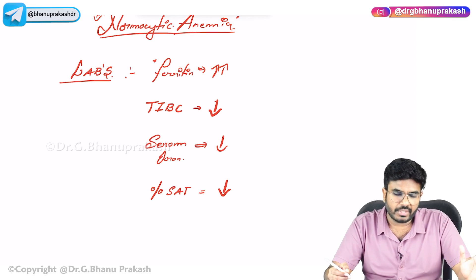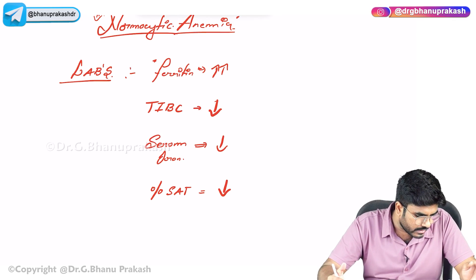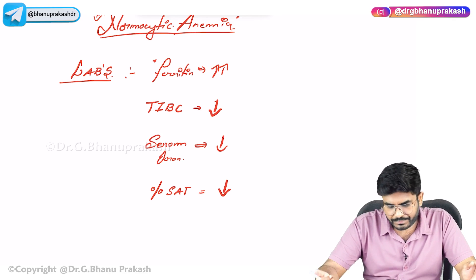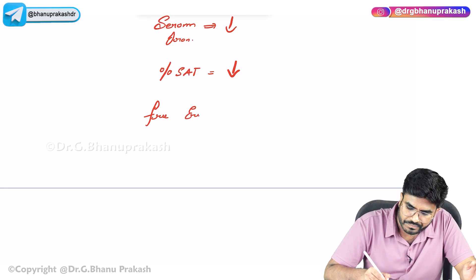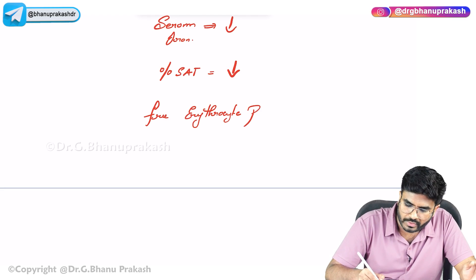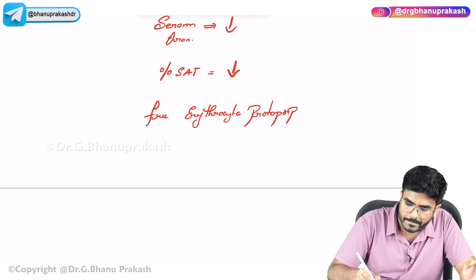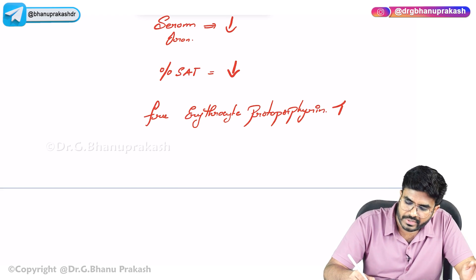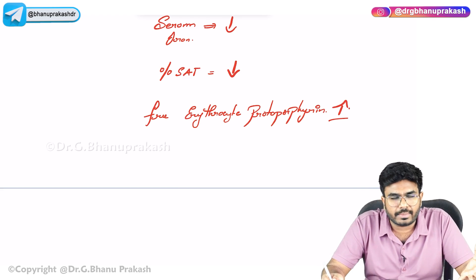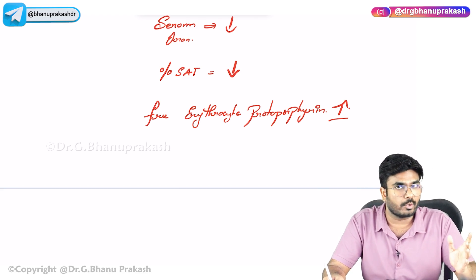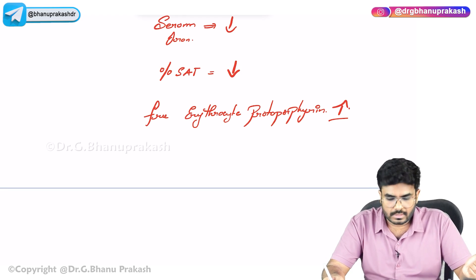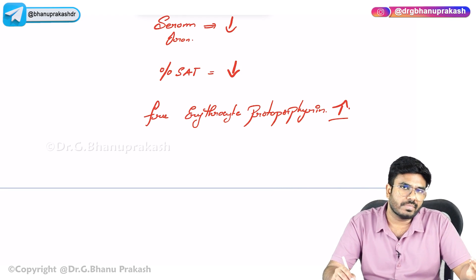These are the laboratory values in anemia of chronic disease. Free erythrocyte protoporphyrin levels are also elevated, because iron is not involved in heme production — protoporphyrin remains free. So free erythrocyte protoporphyrin levels increase.